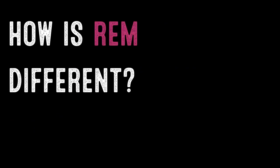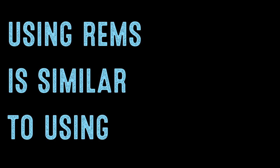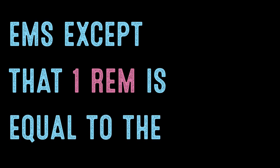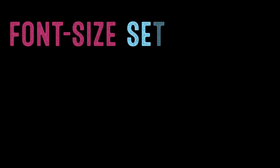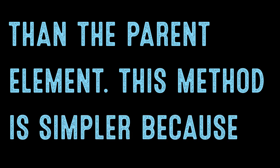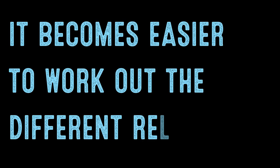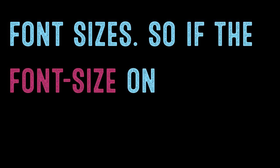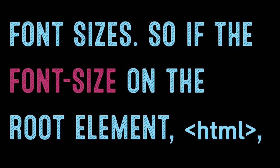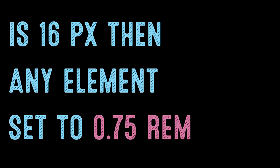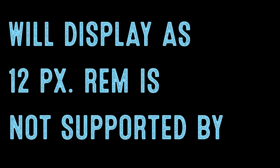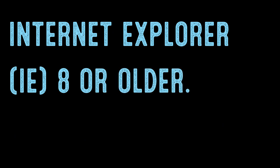How is rem different? Using rems is similar to using ems, except that 1rem is equal to the font size set on the root element of the document rather than the parent element. This method is simpler because it becomes easier to work out the different relative font sizes. So if the font size on the root element (HTML) is 16 pixels, any element set to 0.75rem will display as 12 pixels. Note that rem is not supported by Internet Explorer 8 or older.